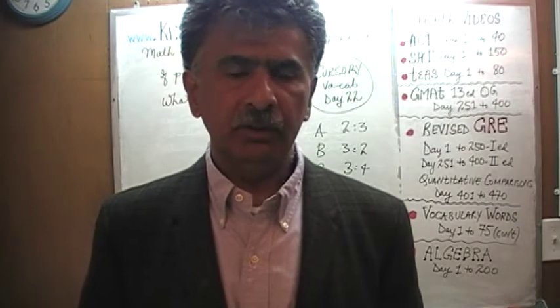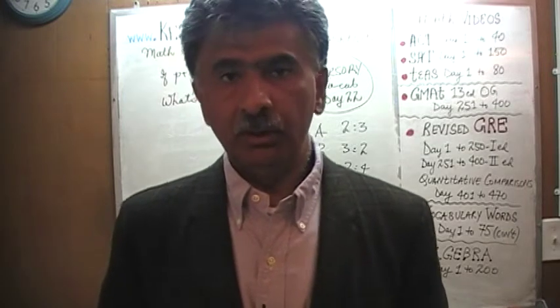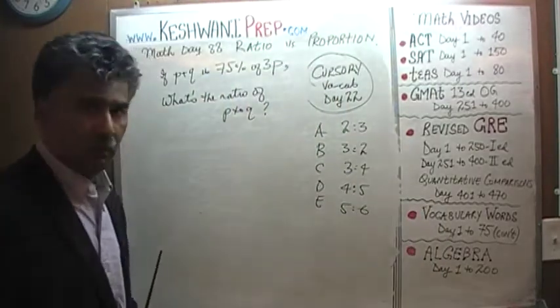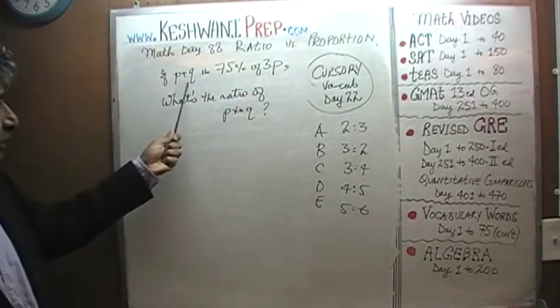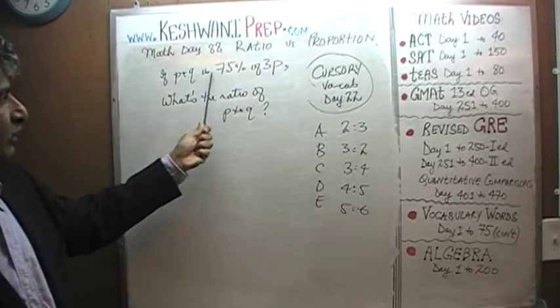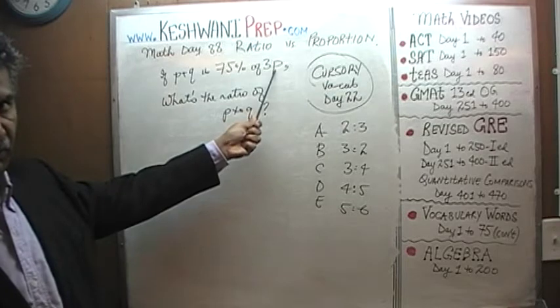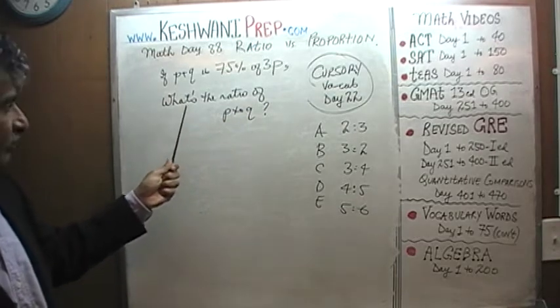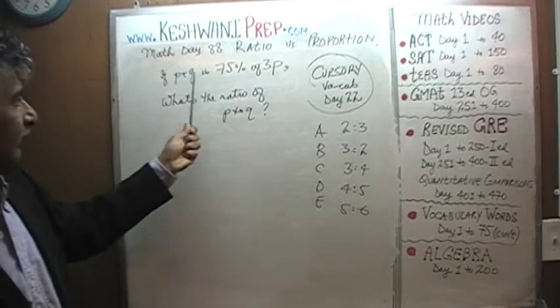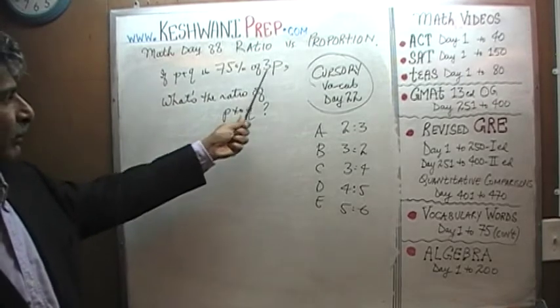We are going to do a few problems dealing with the notion of ratio. The very first problem is already on the blackboard. Here is how the problem goes. We are told that the sum of P and Q, P plus Q, we are told is 75% of 3 times P. P plus Q is 75% of 3 times P. The question is very simple, very straightforward. The question simply is, what is the ratio of P to Q if their sum happens to be 75% of 3 times P?